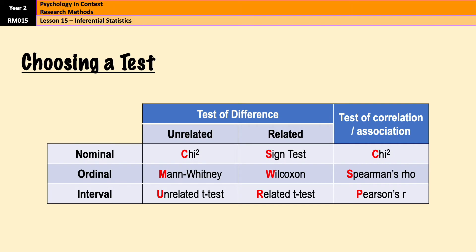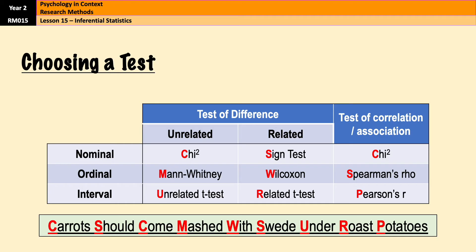Along the top you have your column headings: test of difference — which can be either unrelated or related — and then at the end, test of correlation or association. Correlations can't be related or unrelated because you don't have experimental designs in correlational research. There is a mnemonic to help you remember which statistical test comes where: 'Carrots Should Come Mashed With Swede Under Roast Potatoes.' Carrots is chi-squared, Should is the sign test, Come is chi-squared again, Mashed is Mann-Whitney, and so on.